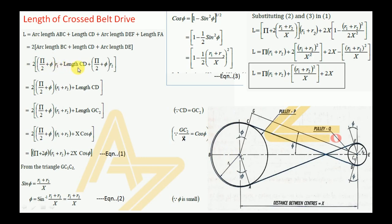So π/2 + π multiplied by r1 gives the arc length of BC, plus length CD, plus for the second pulley the same applies — because of the cross there is an additional π angle — giving (π/2 + π) × r2 for arc DF. Taking π/2 + π as common from the first and third terms: π(r1 + r2) + length CD. This is Equation 1.